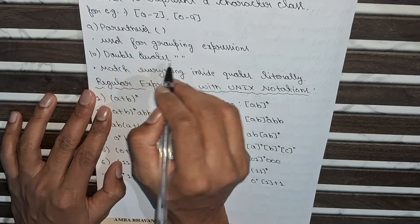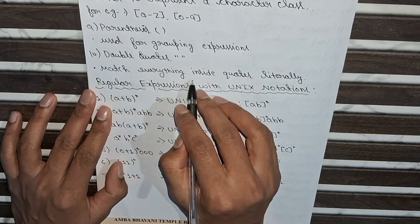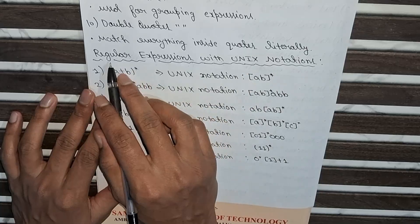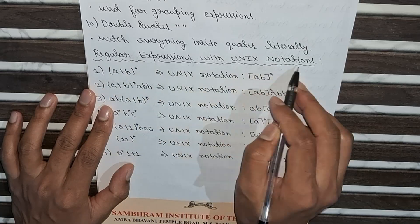And the tenth one is double chords, it matches everything inside chords literally. And now we will move to regular expression with Unix notation.